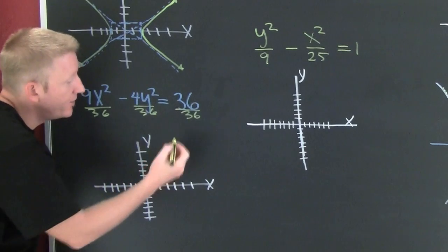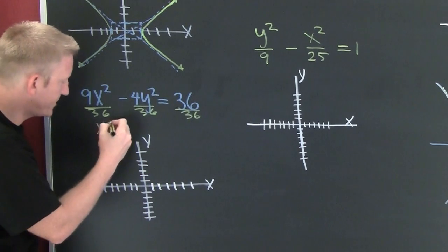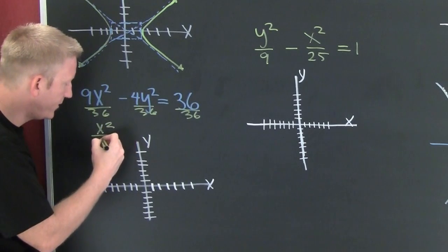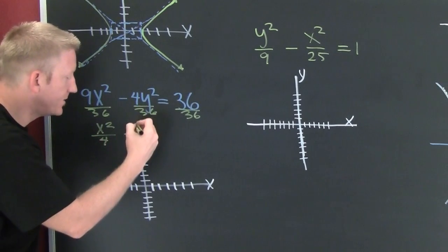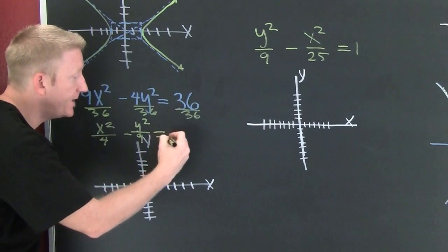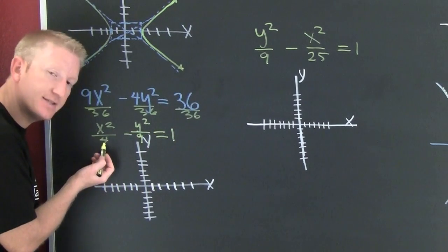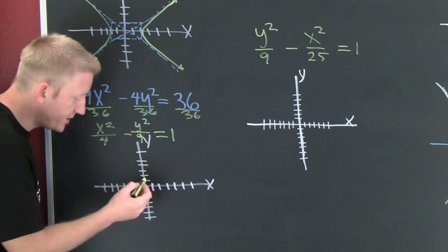Then here we will see this, so then this is X squared over four minus Y squared over nine, and then that's equal to one. Here, that's the square of two. I'm in standard position, so I go left two and right two.